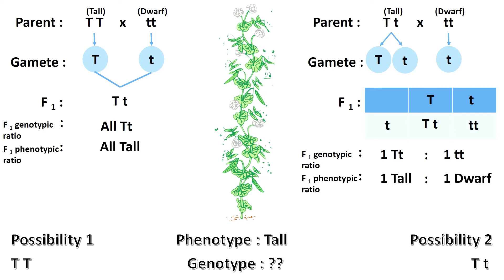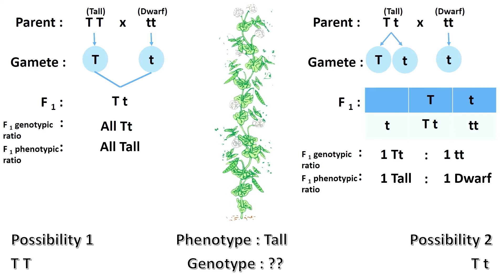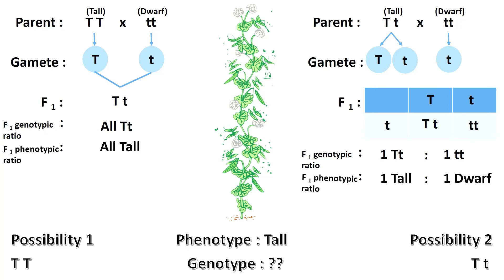So, if the mysterious individual is heterozygous (capital T, small t), half of the offspring produced after a test-cross has been performed on it will have dominant phenotype, and another half will have recessive phenotype — in this case, with a ratio of 1 tall to 1 dwarf.